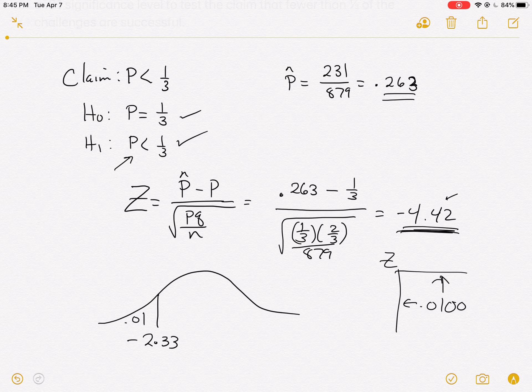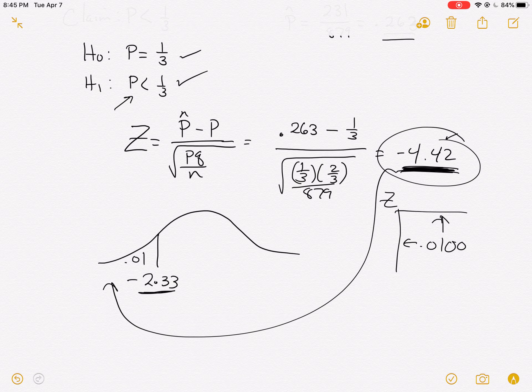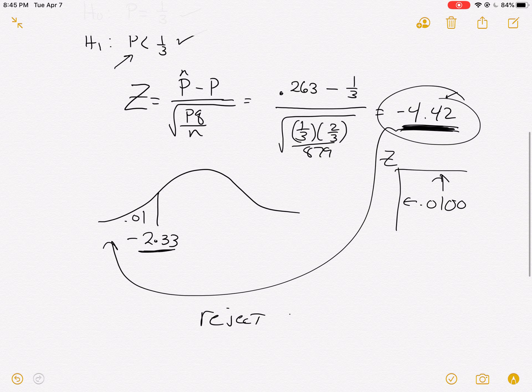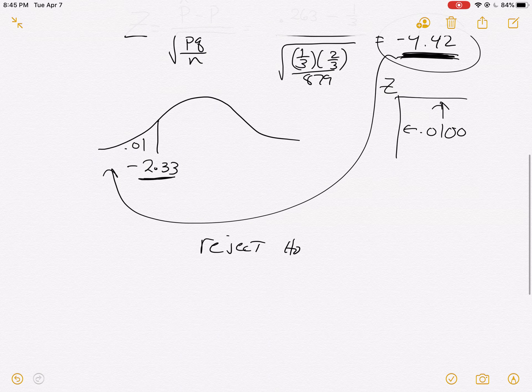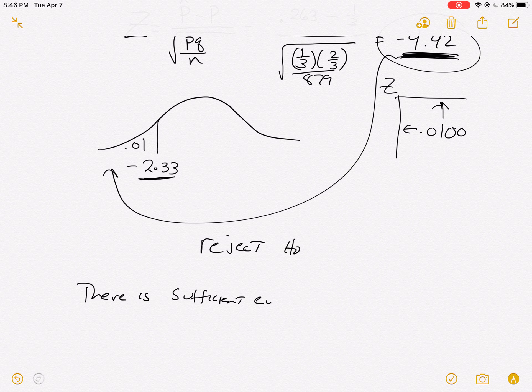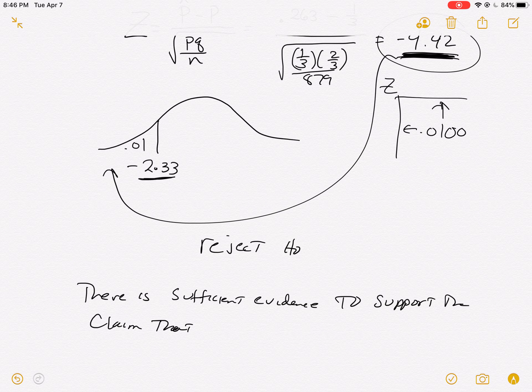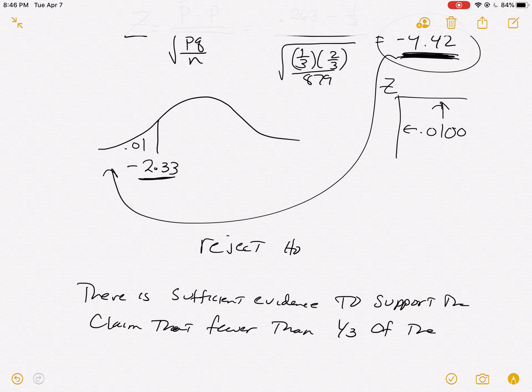We're negative 4.42 standard deviations to the left. That's way more than 2.33, and so you can physically see that negative 4.42 is in that rejection region. We're going to reject the null hypothesis. We can say there is sufficient evidence to support the claim, and then just write out that claim: fewer than one-third of the challenges are successful.